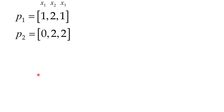Now let's talk about the theory behind calculating the Manhattan distance. Suppose that we have two points, P1 and P2. These are the coordinates of P1 and P2. You can see here are the x1 coordinates, the x2 coordinates, and the x3 coordinates of each point. Although this example is three-dimensional, it can be generalized to higher dimensions as well.